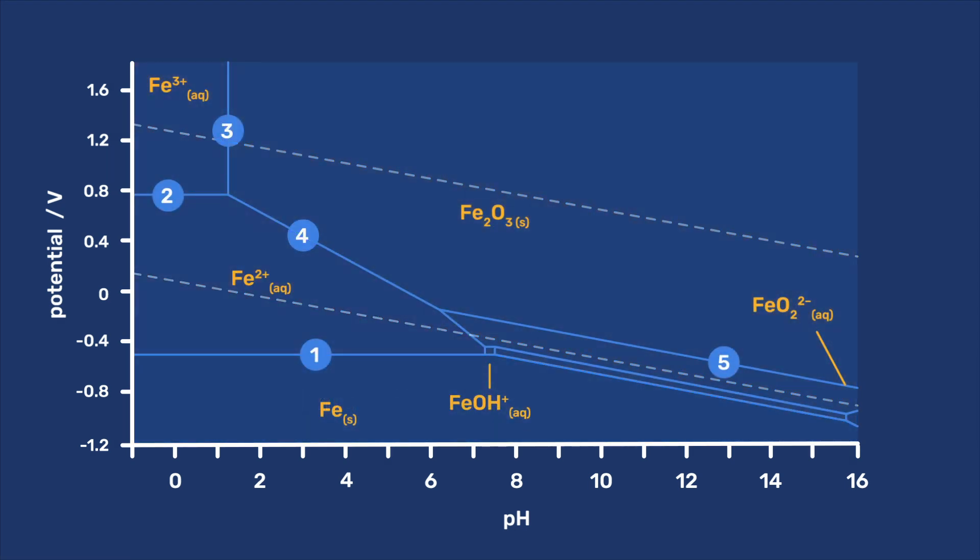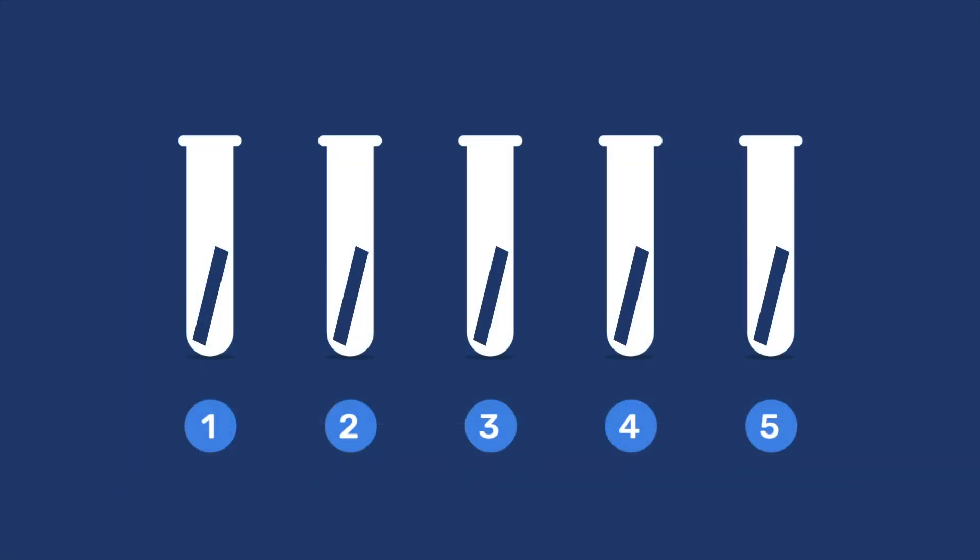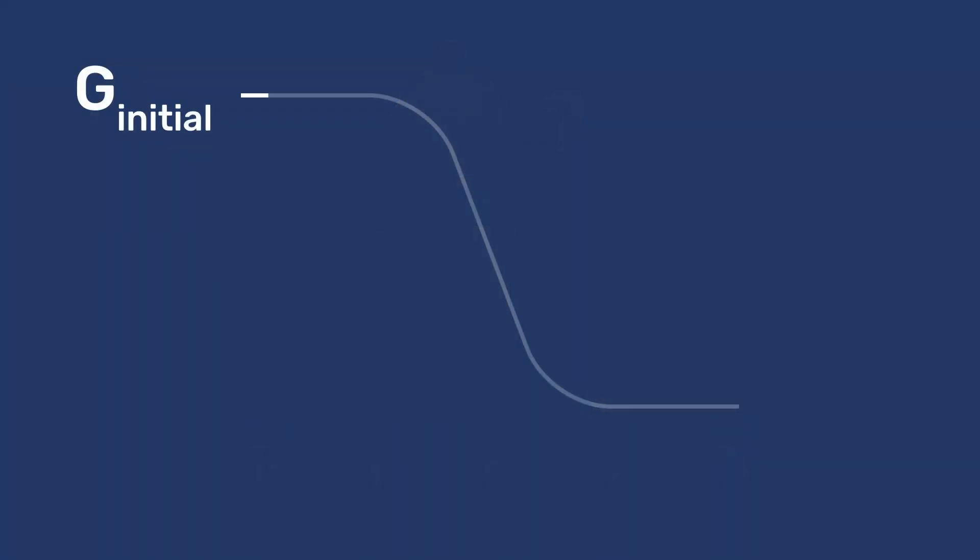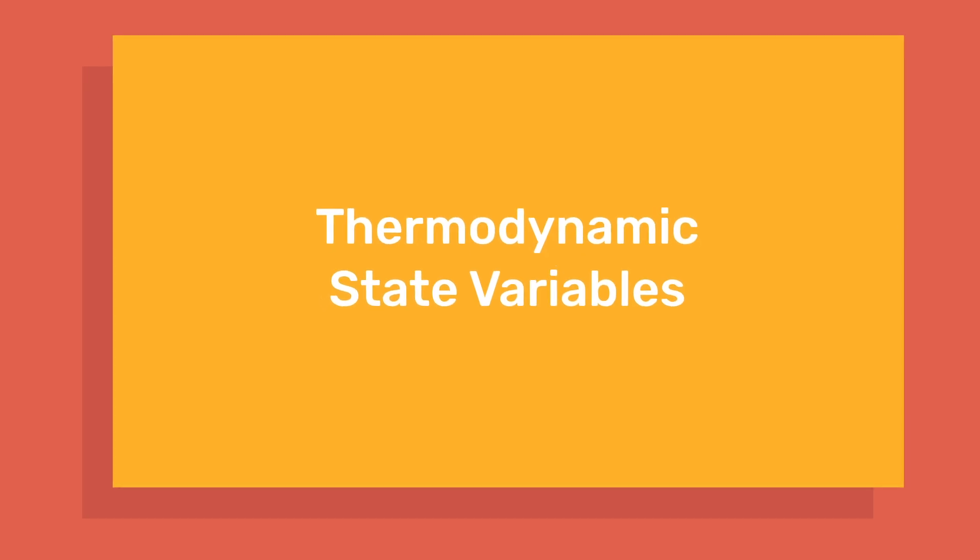Pourbaix diagrams give the thermodynamic stability of different phases, but they do not indicate whether or not the corrosion reactions will take place at observable rates. To learn more about the difference between thermodynamics and kinetics, please watch the video thermodynamic state variables.